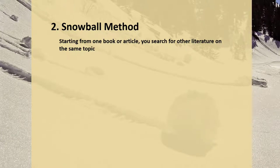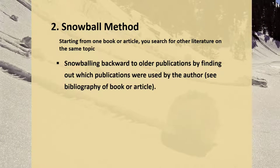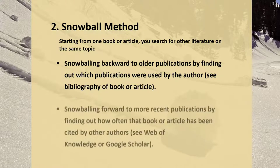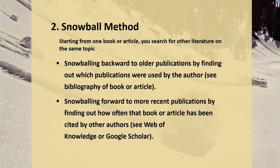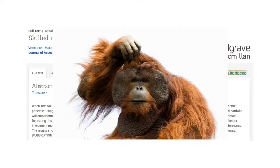The Snowball method works by taking one book or article and working forwards and backwards in time from that piece of literature to find more sources on the same topic. Say you find the perfect article for your research after doing some Shotgun searching. How do we take this article and use it to find more sources?